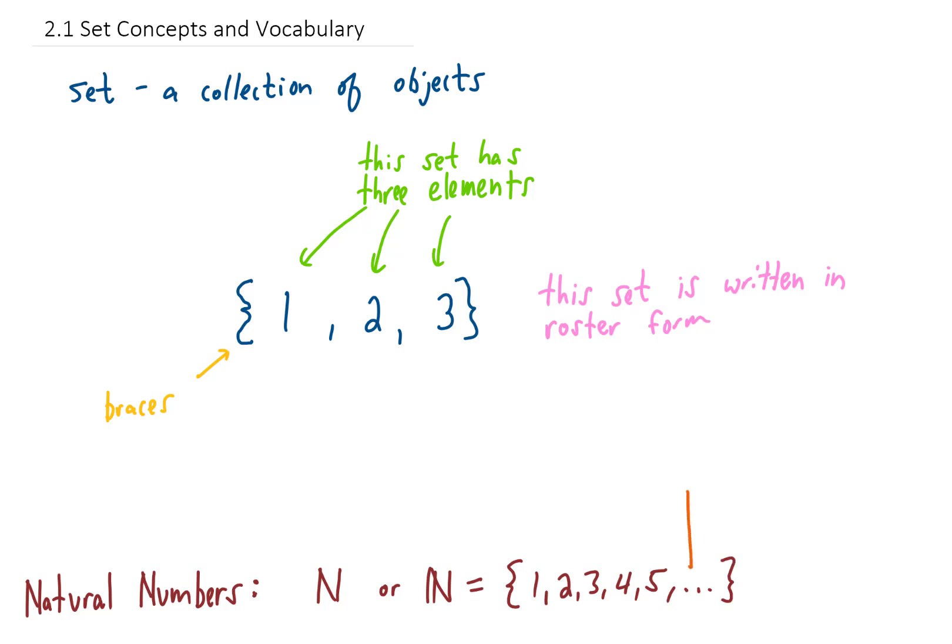When a set in roster form has these three dots here, those three dots are called an ellipsis, and that indicates that these elements continue in the same manner and go on potentially forever. If the ellipsis is the last element, that means that this set goes on forever.